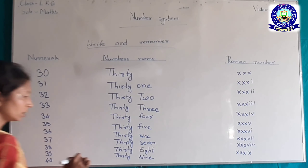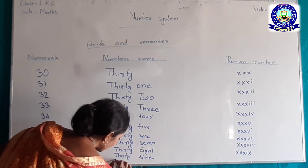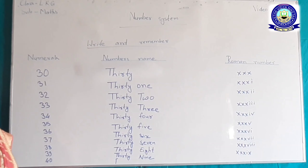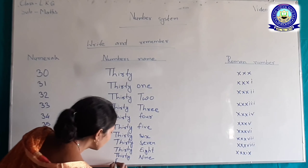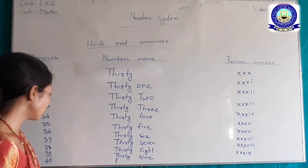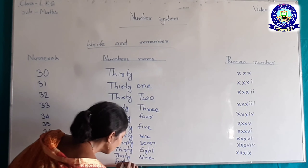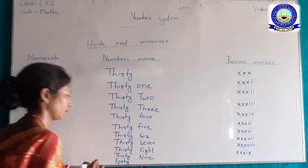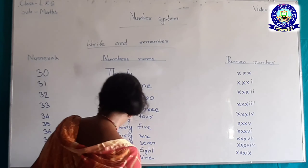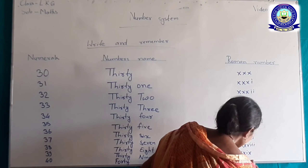40, 40। 40 का भी यहाँ आ जाता है। ध्यान देने वाली बात है। 40 का लिखेंगे — 40 का Roman number XL होगा।